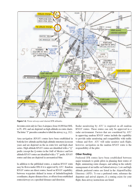Area Navigation, RNAV, routes have been established in both the low-altitude and high-altitude structures in recent years and are depicted on the on-route low and high chart series. High-altitude RNAV routes are identified with a Q prefix, except the Q routes in the Gulf of Mexico, and low-altitude RNAV routes are identified with a T prefix. RNAV routes and data are depicted in aeronautical blue. In addition to published routes, a random RNAV route may be flown under IFR if approved by ATC. Random RNAV routes are direct routes, based on RNAV capability, between waypoints defined in terms of latitude/longitude coordinates, degree-distance fixes, or offsets from established routes/airways at a specified distance and direction. Radar monitoring by ATC is required on all random RNAV routes and these routes can only be approved in a radar environment.